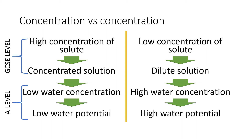If we have the reverse — a low concentration of solute — that means we have a very dilute solution, which in turn means we have a high water concentration. There's lots of space for the water, which means we have a high water potential. If you think of orange juice, think of concentrated and dilute orange juice, and that can often help clarify it.